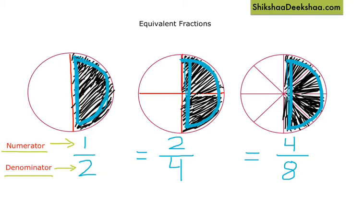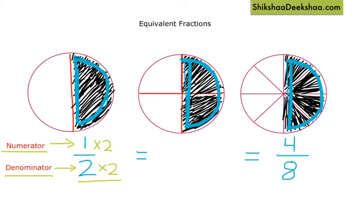For example, if I take the fraction one by two and multiply both numerator and denominator by two — we must multiply both by the same number — I get one multiplied by two equals two, and two multiplied by two equals four. So I get two by four, and I can say that one by two is equivalent to two by four.